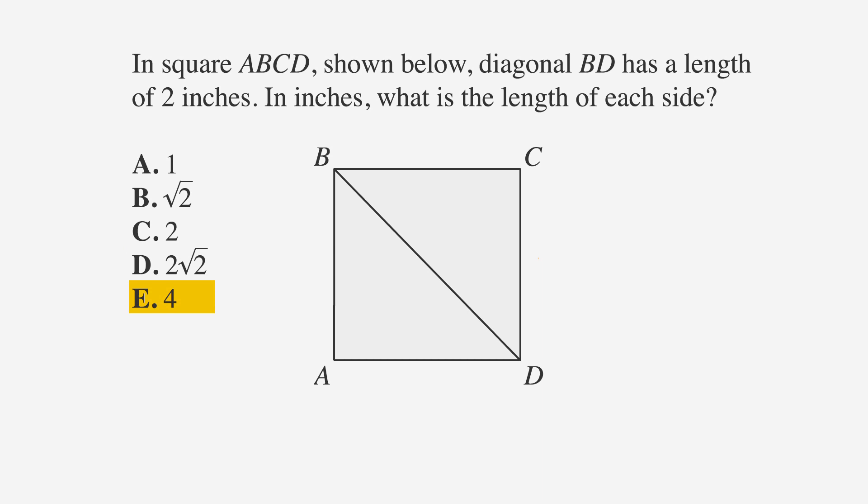Let's put the information that we've been given into the drawing. First, we're told that this shape is a square, so let's label all the sides as equal. And we'll label BD as 2. We're looking for the length of one of the sides. Let's put an x next to a side to remind ourselves what we're solving for.